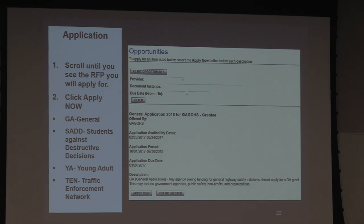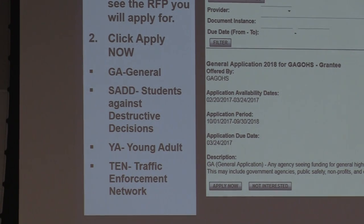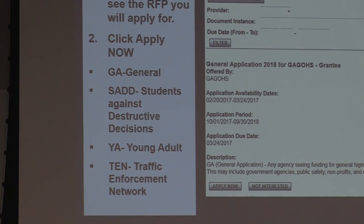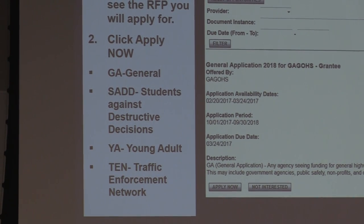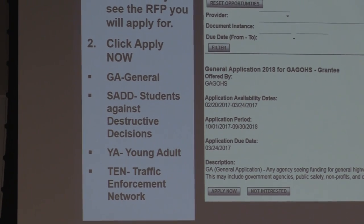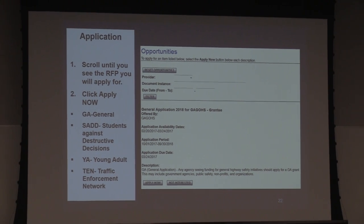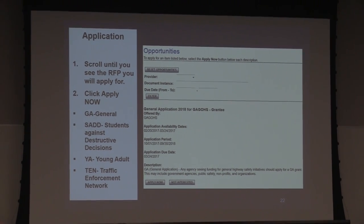There are four types: General, SADD — Students Against Destructive Decisions — Young Adult, and Traffic Enforcement Networks. There's only a specific set of people that will be doing Traffic Enforcement Networks. That's an elected process through our networks, so please don't put in for a Traffic Enforcement Network grant unless you are one of our coordinators or assistant coordinators.